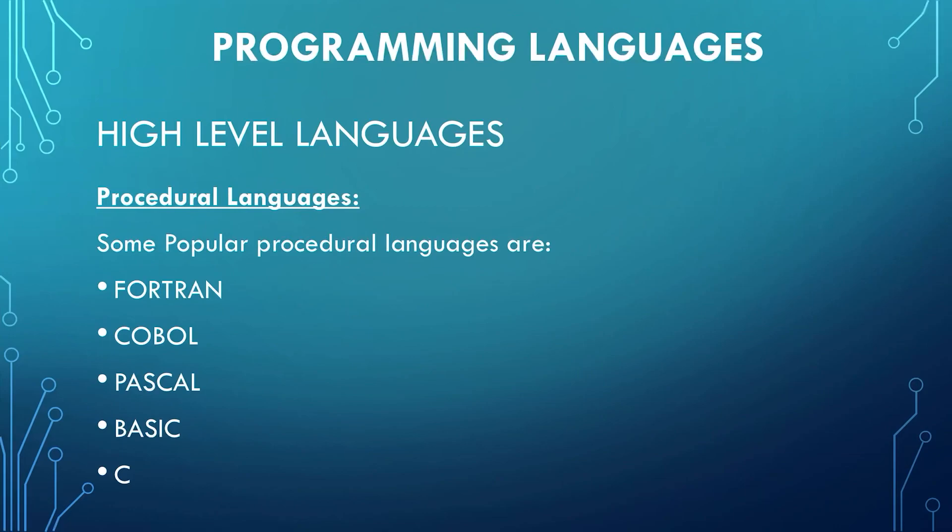Fortran stands for Formula Translation. It is mainly used for engineering applications and scientific use. COBOL stands for Common Business Oriented Language. It is specially designed for business applications and was developed early in the 1960s. The programs written in COBOL are lengthy but easy to read, write, and maintain. Then we have Pascal. This is a language used for both scientific and business applications. Its name was assigned in honor of a French mathematician, Pascal.